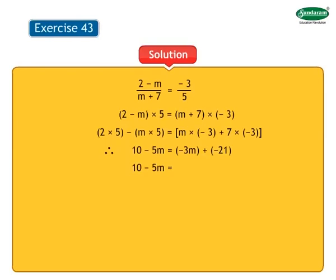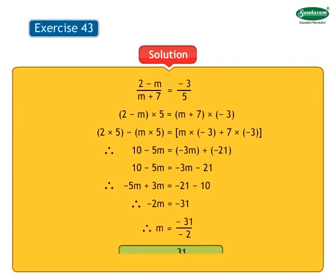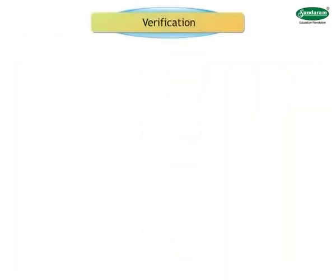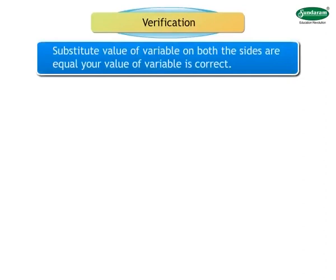Now, how can we be sure that your answer is correct? Is there any method to check? Yes. This is called verification — to substitute the value of the variable on both sides. If both sides are equal, then your answer is correct. Let us take an example. Let us solve the equation: 7 into x is equal to 20 minus x. Bring like terms together. We get 7x plus x is equal to 20. Therefore, 8x is equal to 20. Dividing both sides by 8, 8x divided by 8 is equal to 20 divided by 8. After reducing to lowest terms, x is equal to 5 divided by 2.